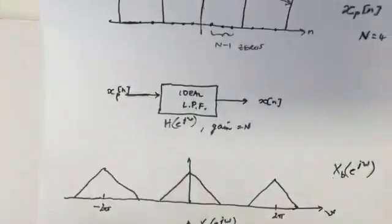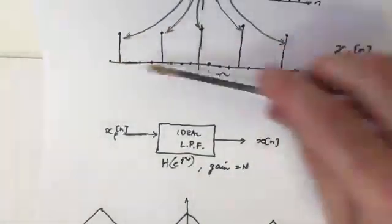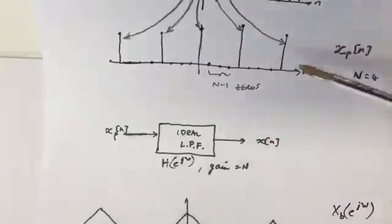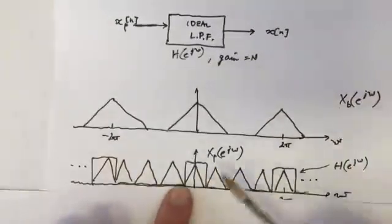This is your Fourier transform of your interpolated, or zeros added signal. And now, to get a smoothed signal,